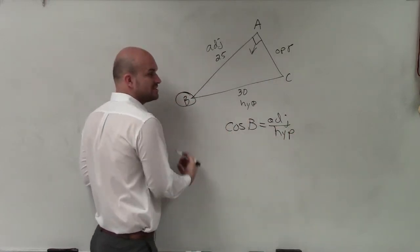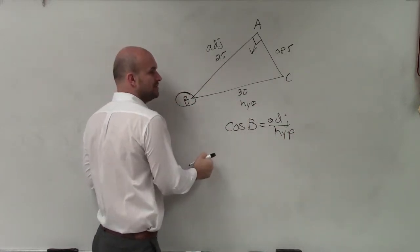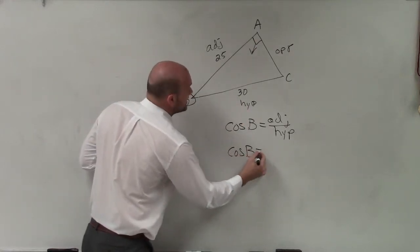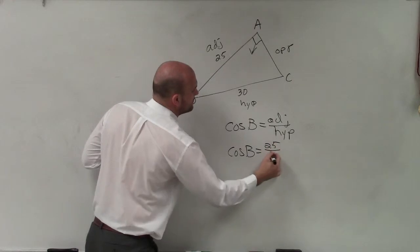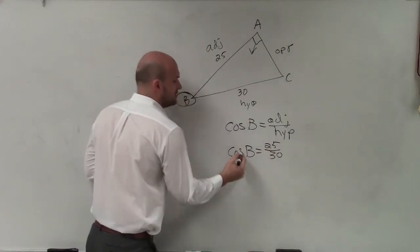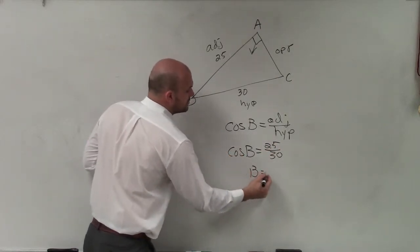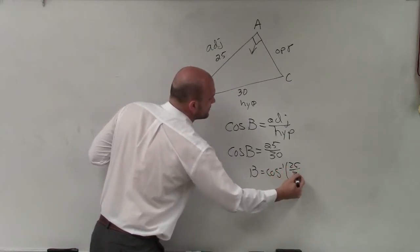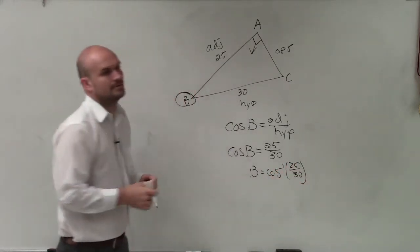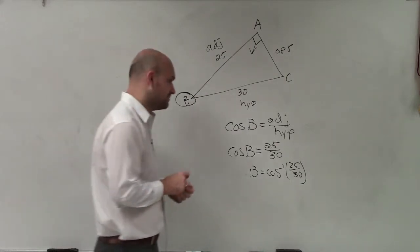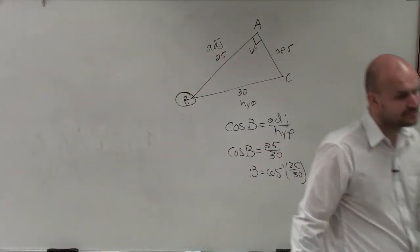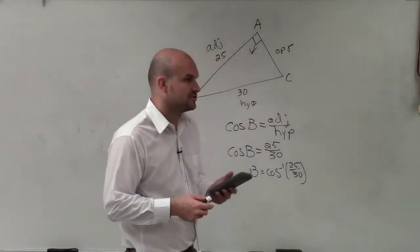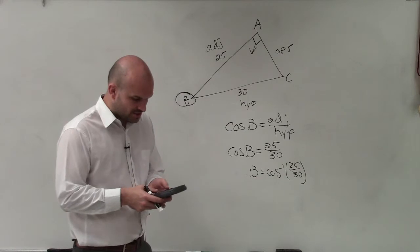Now, do we know the adjacent side? 25. Do we know the hypotenuse? 30. So cosine of B equals 25 over 30. Then B equals cosine inverse of 25 over 30. For that whole homework assignment, you're doing the same thing. Whenever you're trying to find the angle, you're using the inverse function.